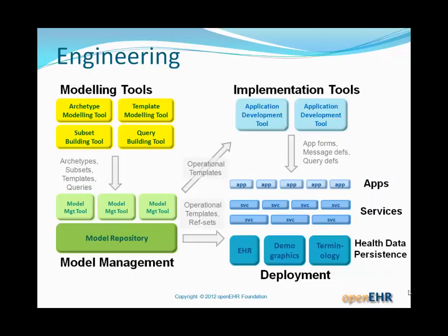Let's look at it from the large-scale engineering systems point of view. This diagram shows the key categories of tools, systems, services, and components needed in an archetype-based world. The right-hand side corresponds to the types of things we expect in normal software engineering environments: application development tools, applications, services, backend systems and services, EHR, demographics, terminology, and so on. What we're adding is the technology on the left.